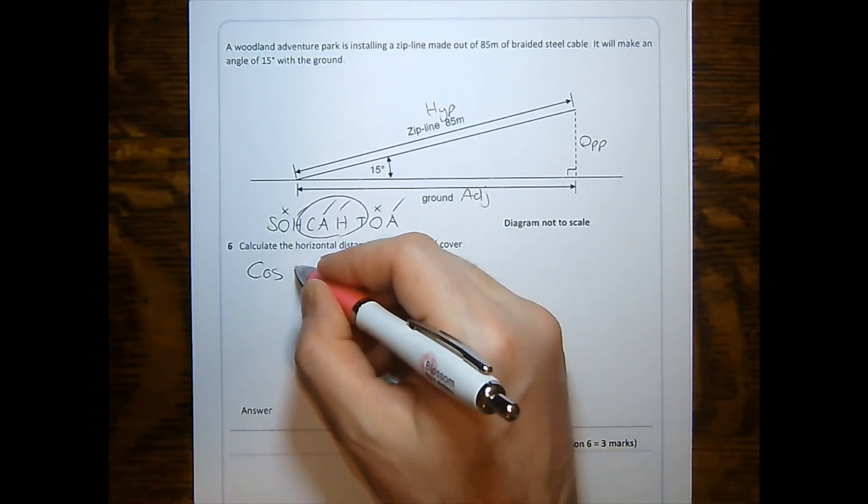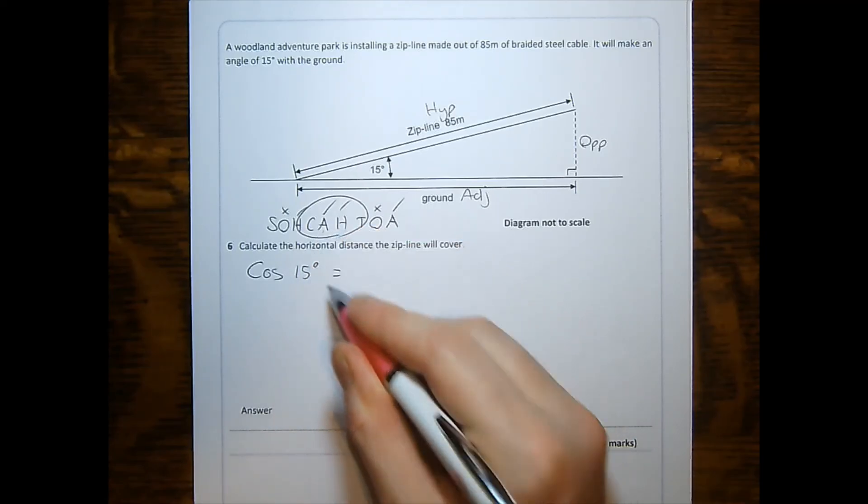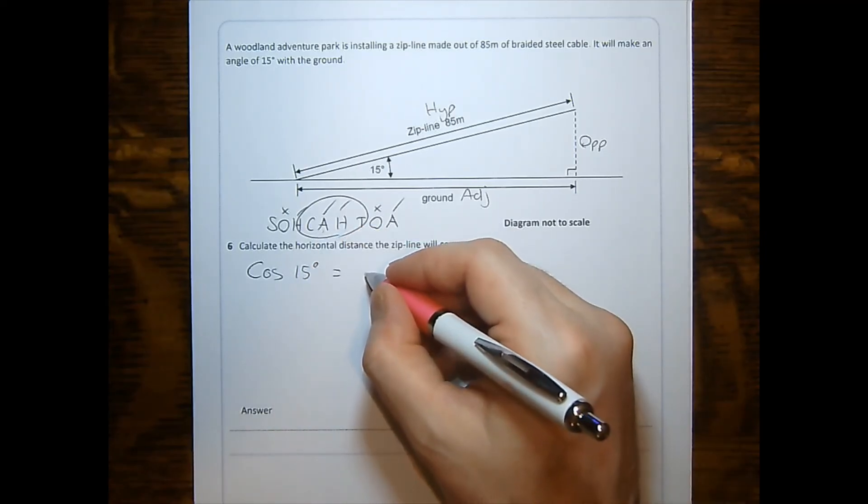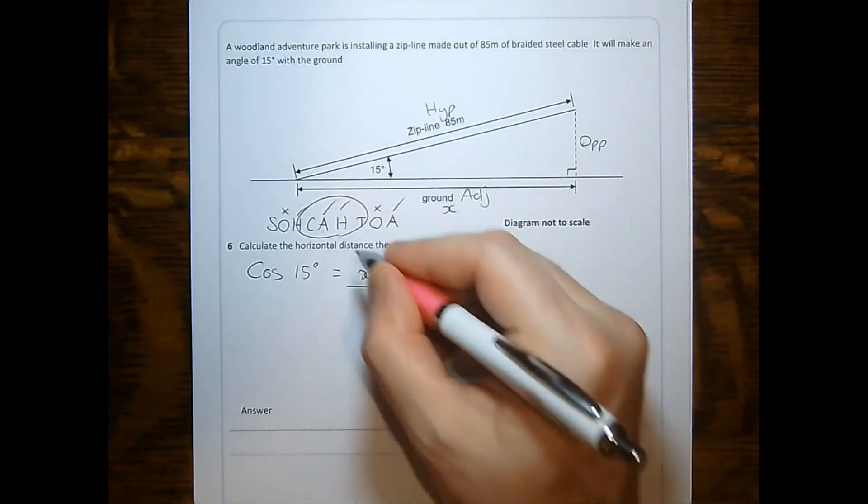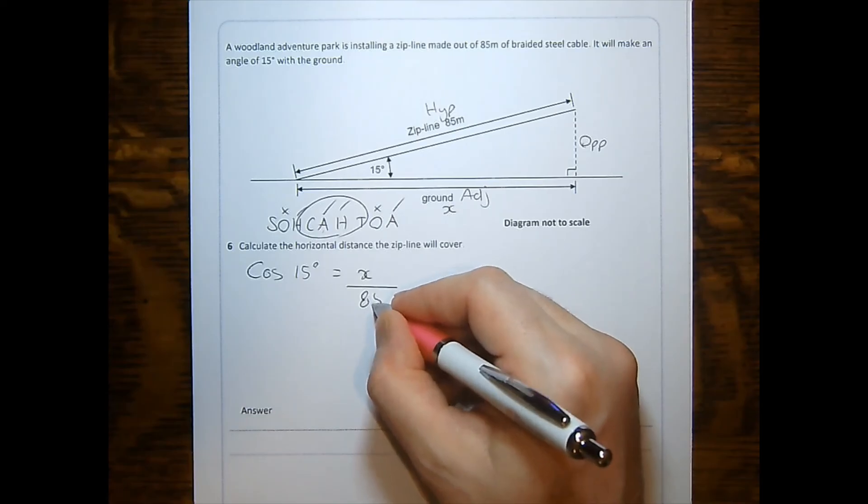Cosine of the angle 15 degrees is equal to the adjacent, which is the ground, which I shall call x for the purposes of my calculations, divided by the hypotenuse, which is the value of 85.